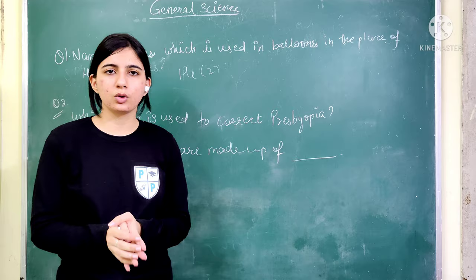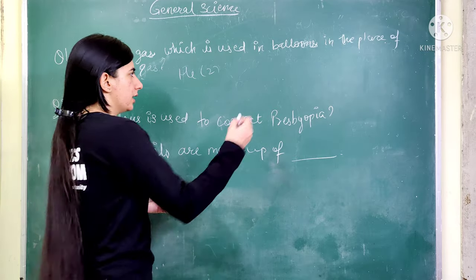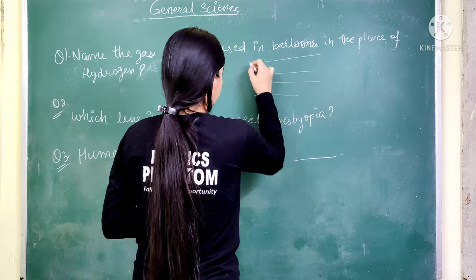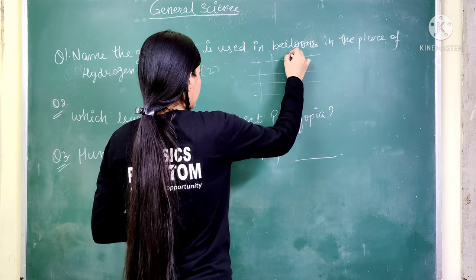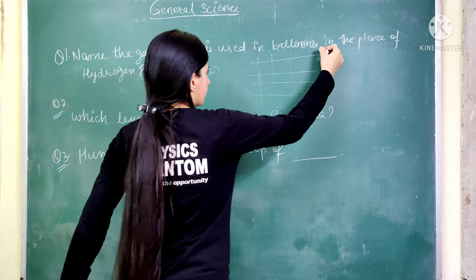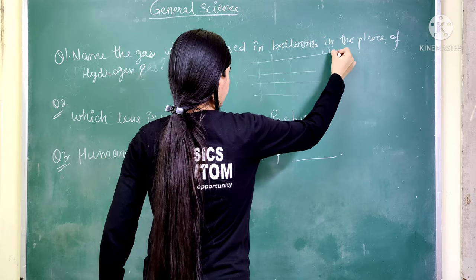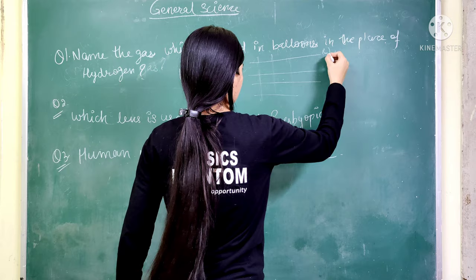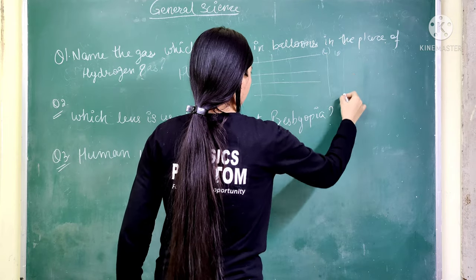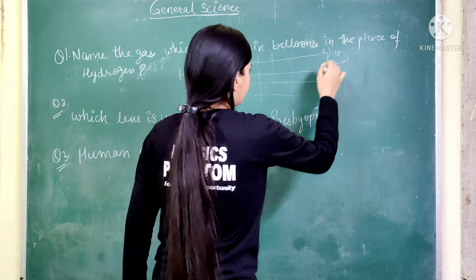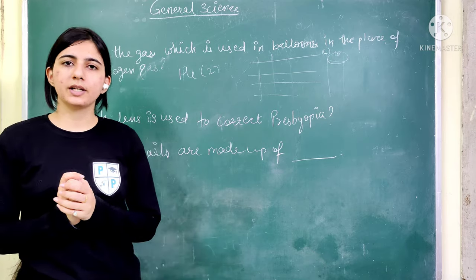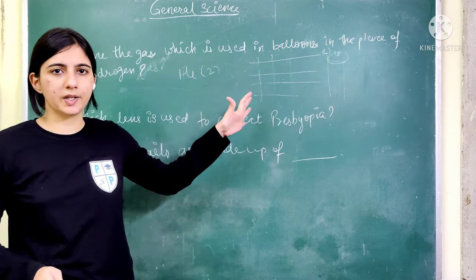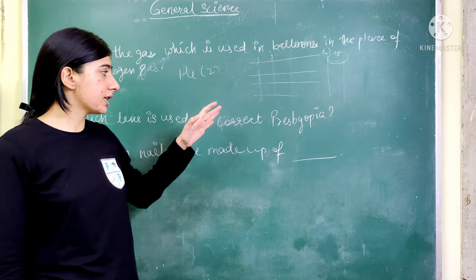Besides, helium belongs to the noble gases group, which is group 18 in the periodic table. The periodic table has a total of seven periods and 18 groups, so the last group, group 18, is the noble gases group. Helium is a noble gas, and it is the first noble gas — it comes at number one among the noble gases.